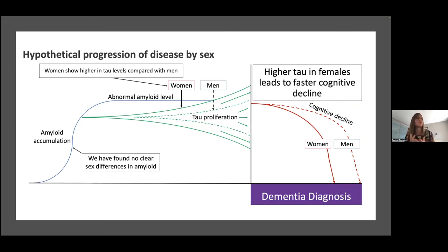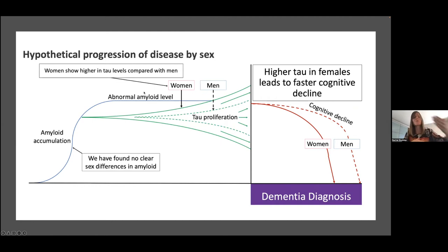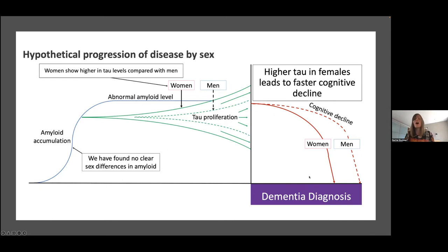To summarize, in older adults we don't see differences in amyloid load between the sexes. But there may be a point at which hitting an abnormality threshold tips women over the edge, causing much faster or greater tau proliferation—not just in medial temporal regions but throughout the brain—leading to faster cognitive decline and potentially higher rates of progression to dementia. So what might be driving these differences?